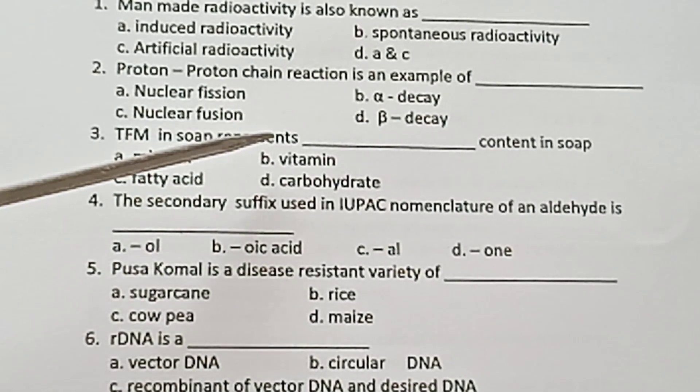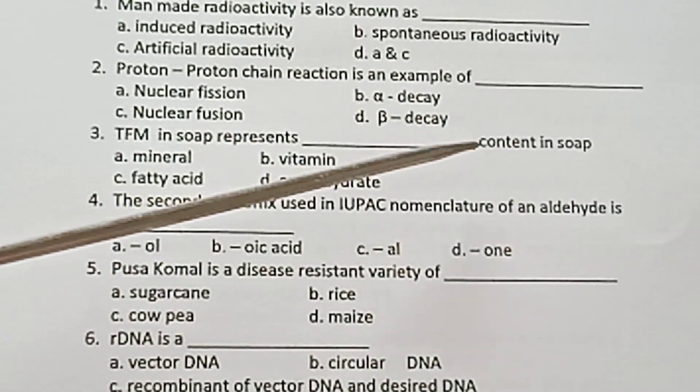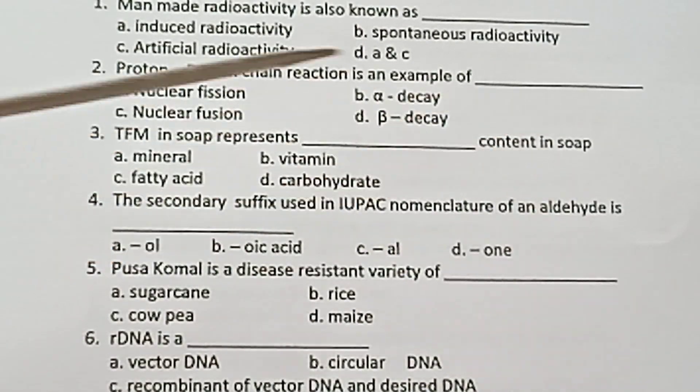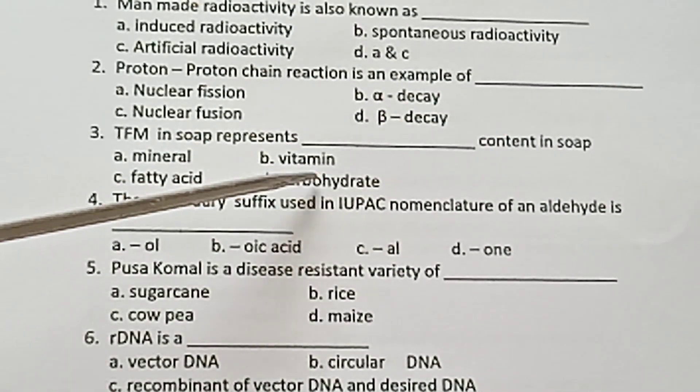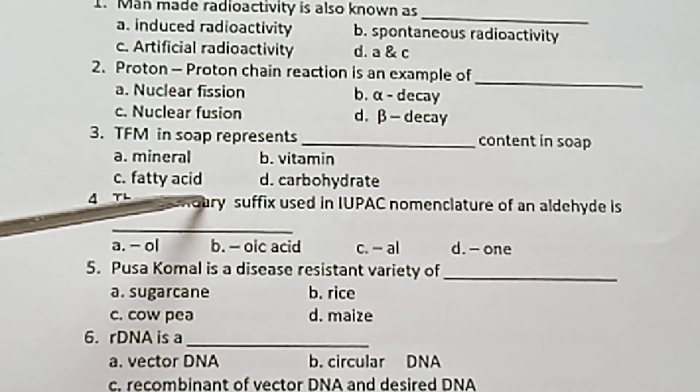Question 3: TFM in Soap represents — Dash — content in Soap. Options: A) Mineral, B) Vitamin, C) Fatty Acid, D) Carbohydrate.